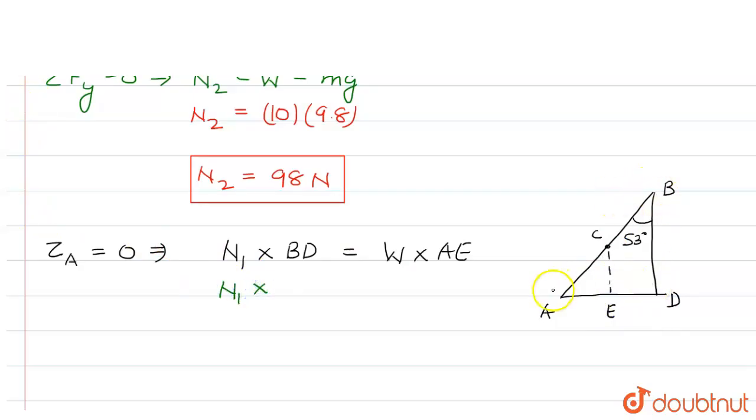So now we have N1 times BD. BD is actually AB cos 53. So BD is AB sin 53. Also, AD is AB sin 53.